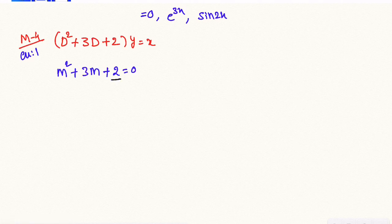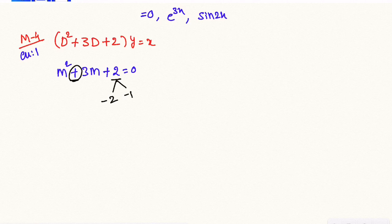The next factor is 2. We find the factors: minus 1 and minus 2. So the roots are m1 = -1 and m2 = -2.